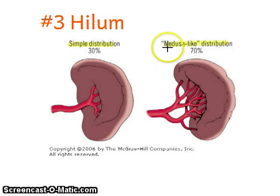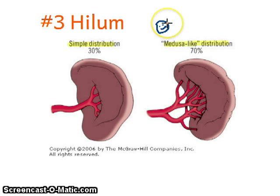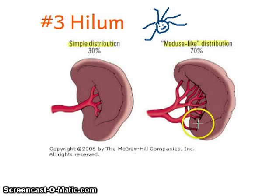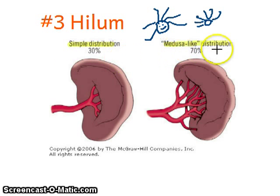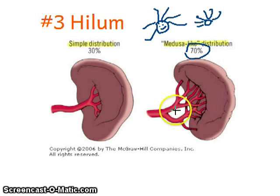What is the medusa-like distribution? Medusa is a character from Greek mythology — she was a pretty girl who was cursed so that her hair changed into snakes. So anything branching like snakes from a small head is called a medusa-like distribution. We also see the term in caput medusae, referring to the vessels around the umbilicus. Ancient doctors were really romantic about naming things. Unfortunately, 70% of splenic hila are medusa-like, meaning it's more common to encounter a hilum full of branching vessels.